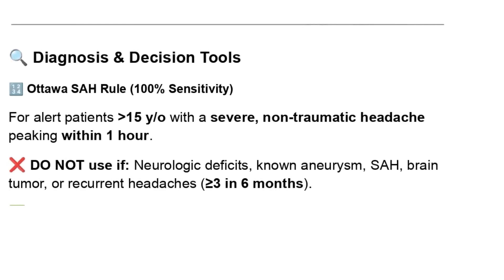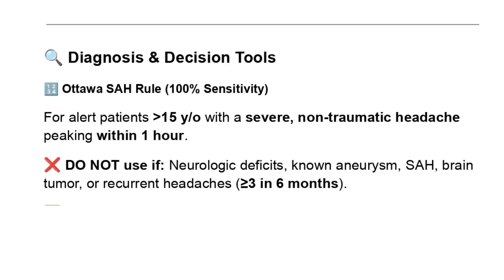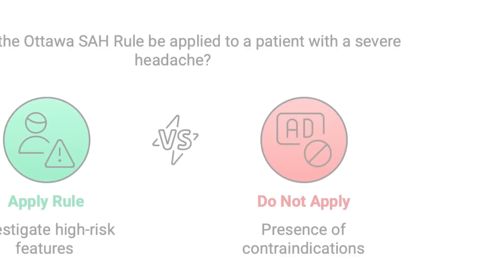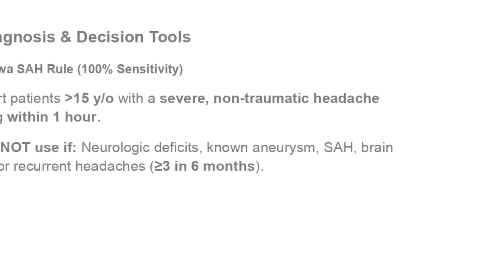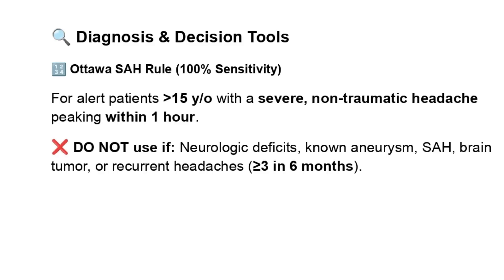Now the Ottawa SAH rule — a set of guidelines for doctors to figure out how likely it is that someone has a subarachnoid hemorrhage. It's used for patients who are alert, over 15 years old, and have a severe non-traumatic headache that hit its worst point within an hour. You should not use the Ottawa SAH rule if the patient has any neurological deficits on exam, or a history of a brain aneurysm, a previous SAH, or a brain tumor. Also don't use it if they have recurrent headaches — specifically three or more bad headaches in the past six months.